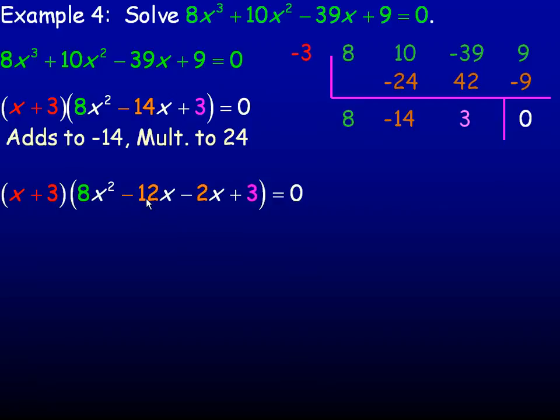The two numbers that work here are negative 12 and negative 2. Negative 12 and negative 2 add to negative 14, and they multiply to positive 24. So we will break that negative 14x down to negative 12x and negative 2x, leaving the 8x² alone at the beginning and the 3 at the end.